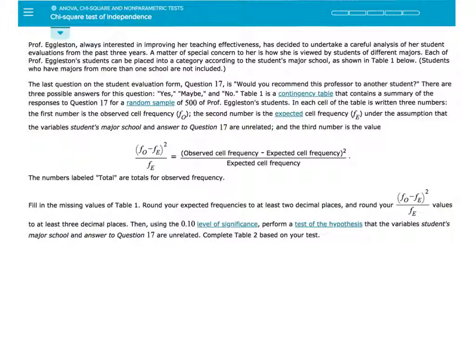The test of independence has very standard hypothesis statements. The null hypothesis says the variables are independent. The alternative hypothesis says variables are dependent, meaning one of the variables somehow is impacted by another or vice versa. There is a correlation of some sort. So, the test for independence will answer the question whether there is a relation or no relation between the student's major school and the answer to question 17.